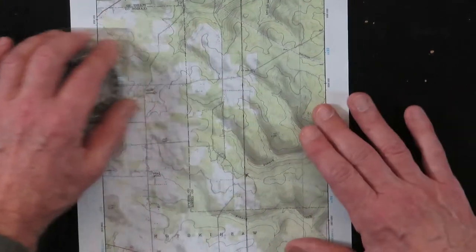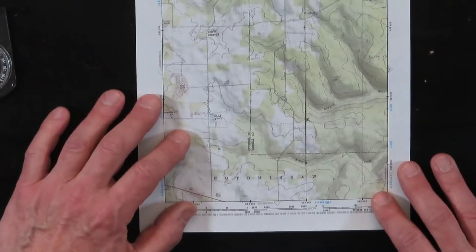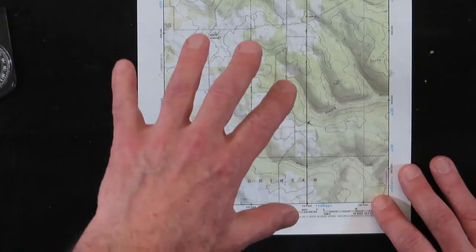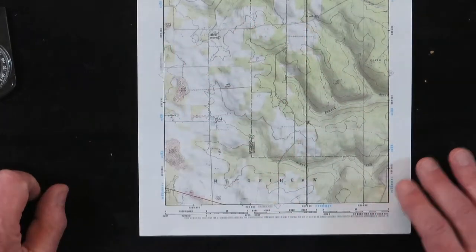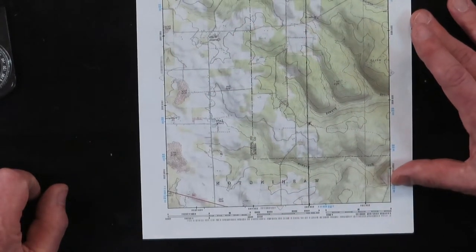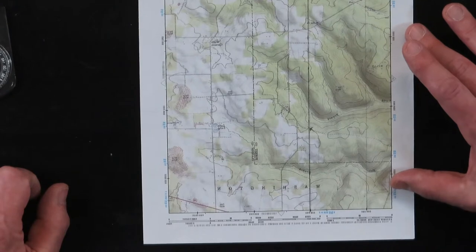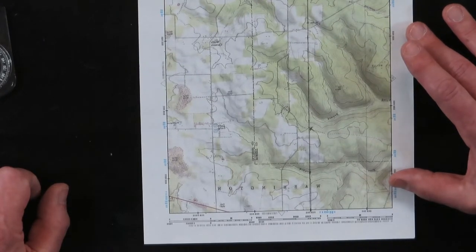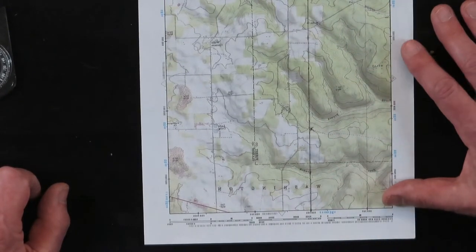So real quick, this is a topographical map and it's an aerial view of the topography that you are going to be hiking in or hunting in or fishing in. And there's a lot of information on this.